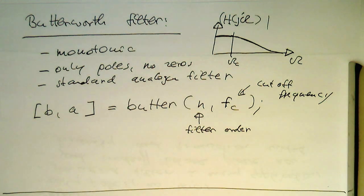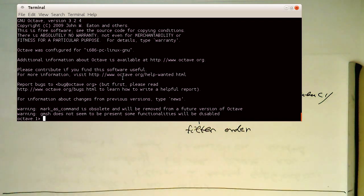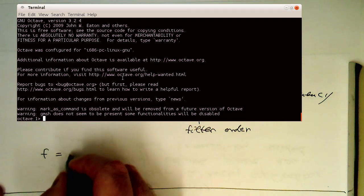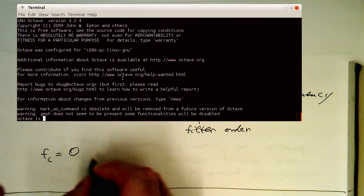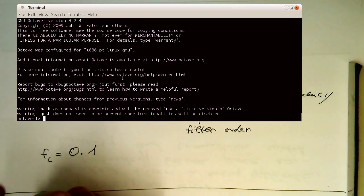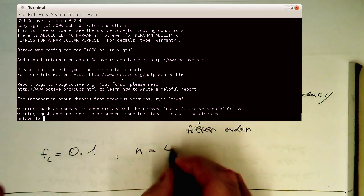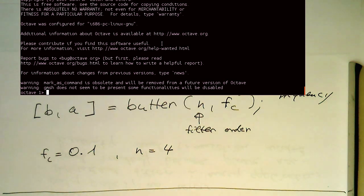So let's try this. So let's say as an example, we set FC to 0.1, and let's say our N, we set this to 4. And let's see how this looks like. So let's move this here a bit up, and we see our command here.